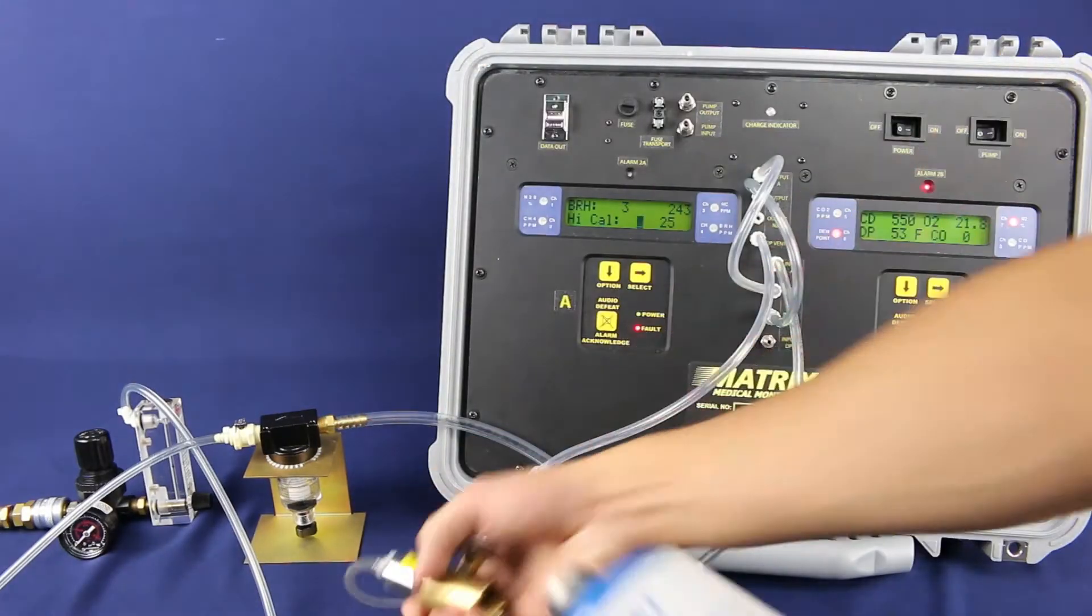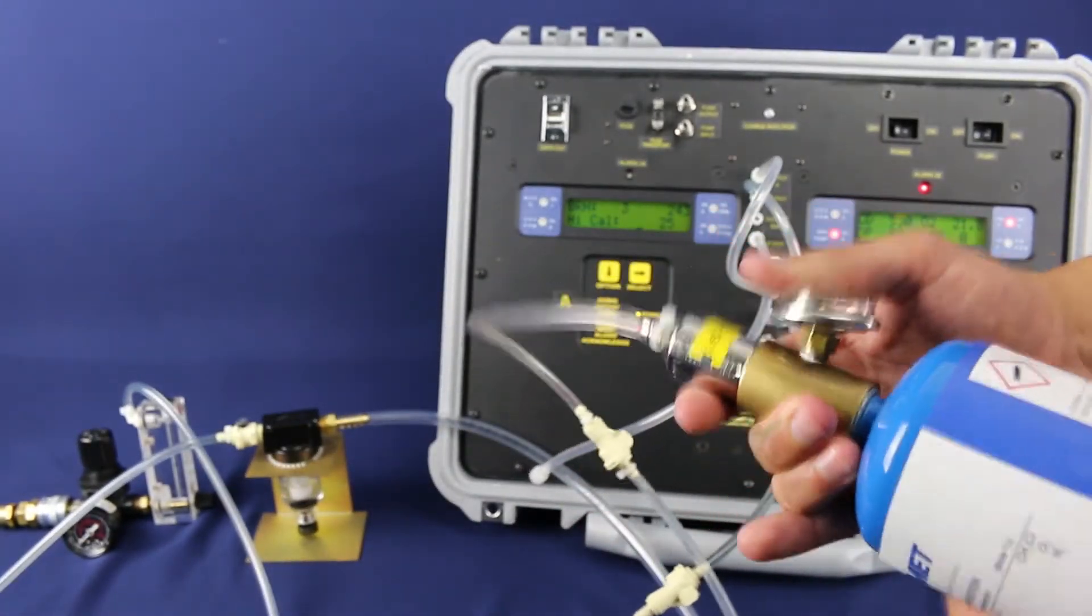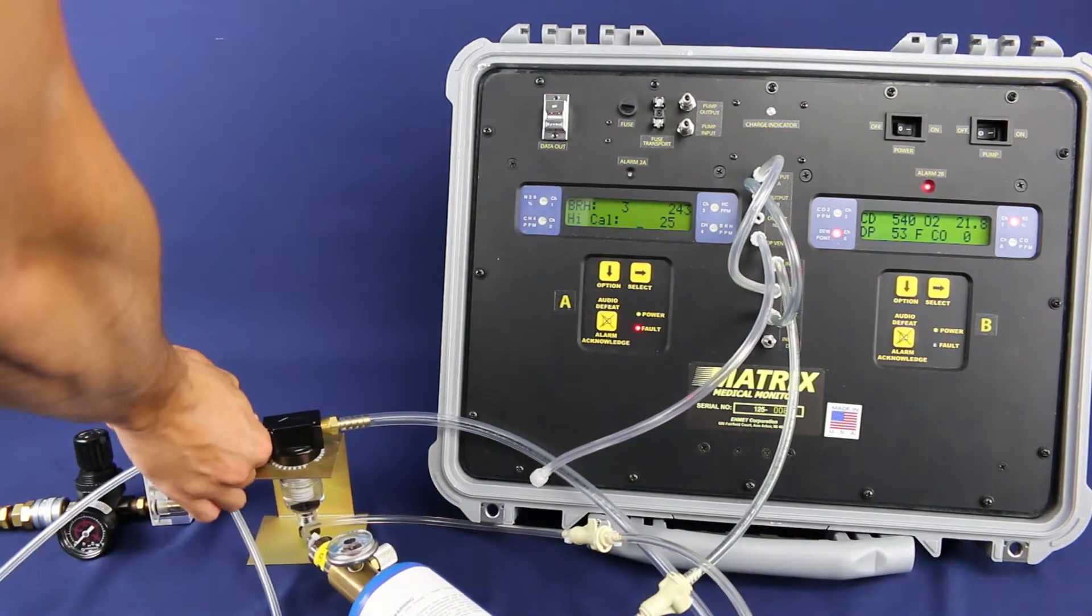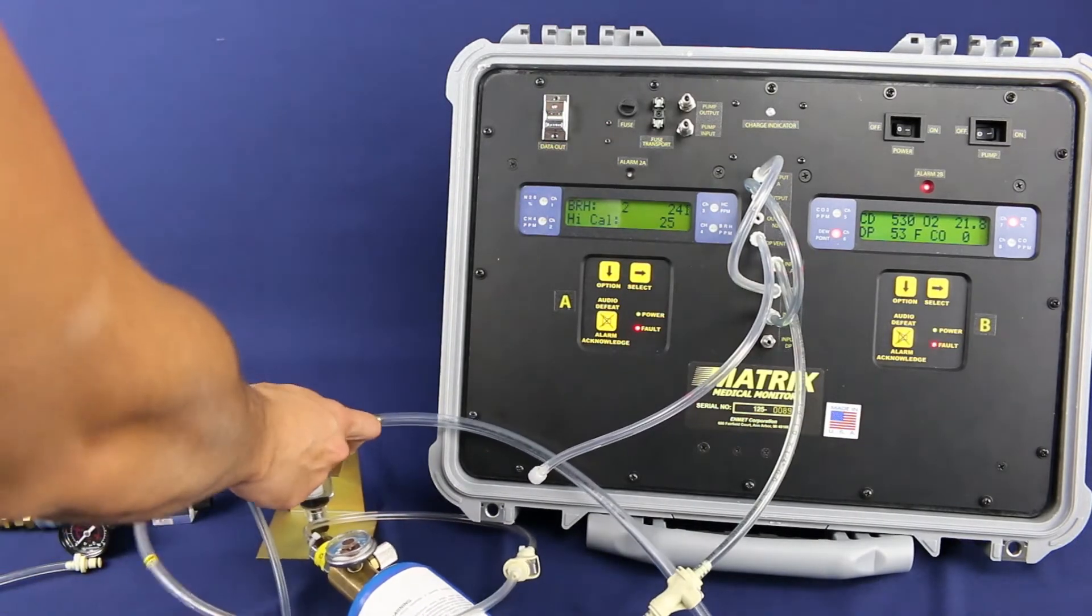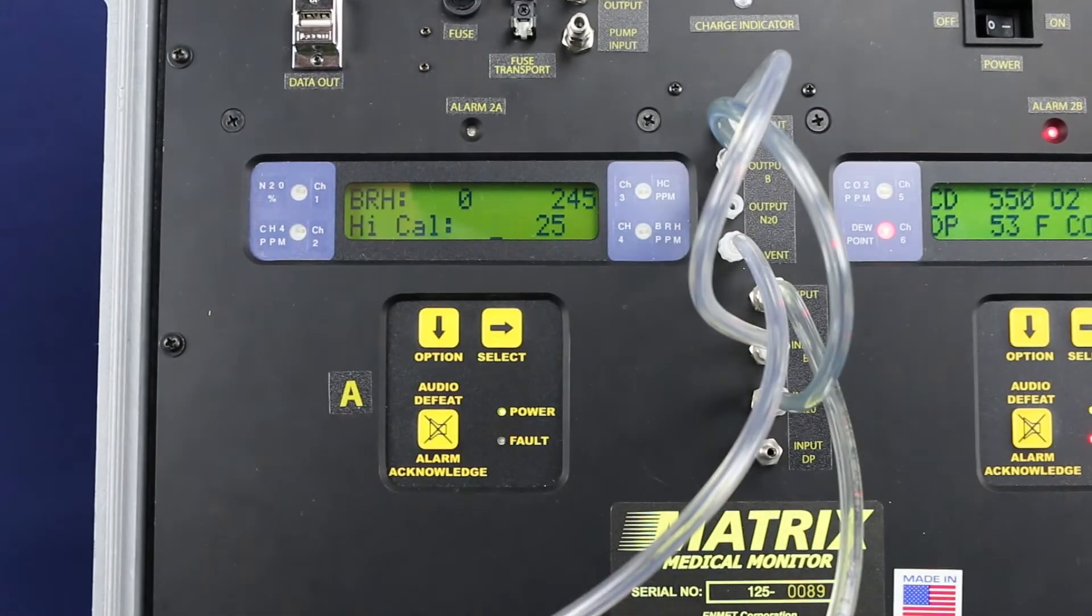Now for the high cal, you will need to attach the 25 ppm methyl chloride cylinder to the regulator, then connect the regulator to the input port of the bubbler assembly and open the regulator valve. You will see the signal on the upper right hand side of the display rise. The present value will be shown on the upper left hand side of the display.